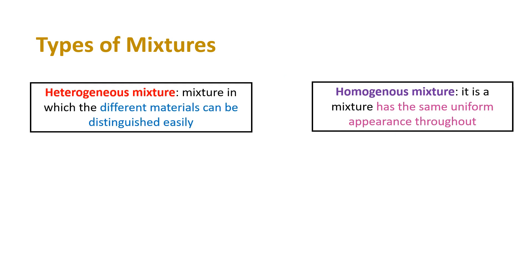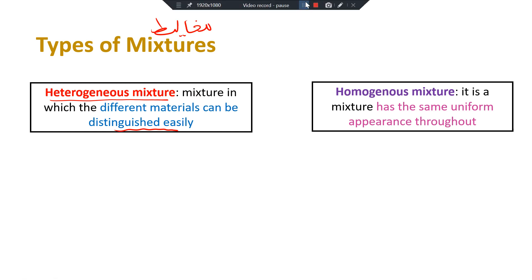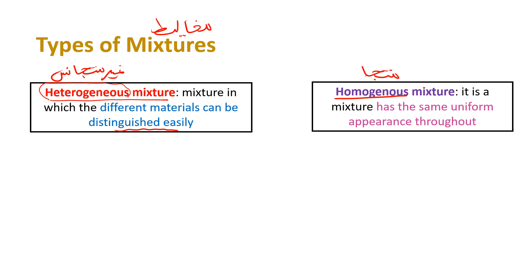We have different types of mixtures — المخاليط — which you studied in grade 8 in science. We have heterogeneous mixtures: mixtures in which the different materials can be distinguished easily. In Arabic, heterogeneous means غير متجانس, and homogeneous means متجانس.